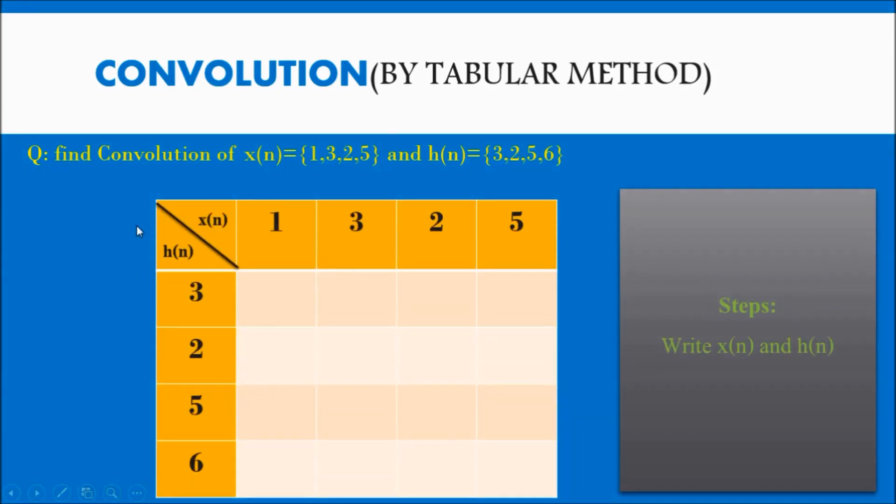First, write x of n and h of n in this way: x of n horizontally with the first element, then second, then third, then fourth. Write h of n vertically with the first element, second, third, and fourth.